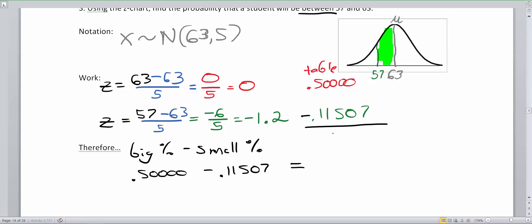If you do that, you get an answer of 0.385 or 385 thousandths, which is 38.5 percent is between our two scores here, which would be 57 and 63.